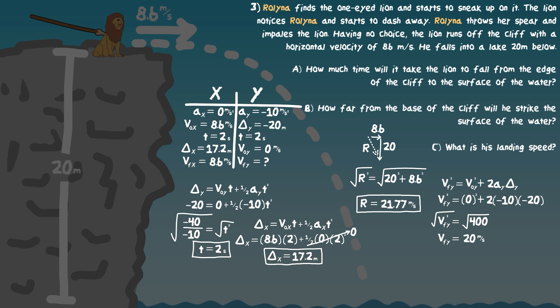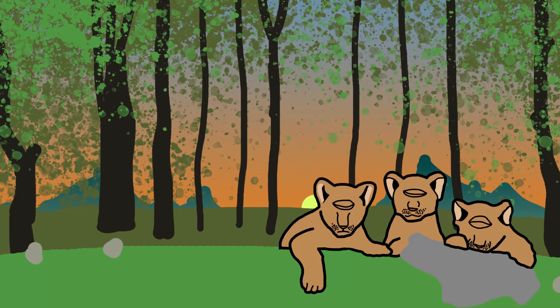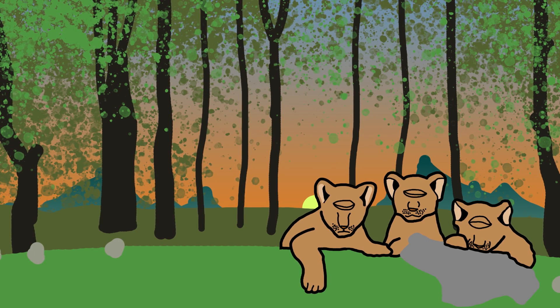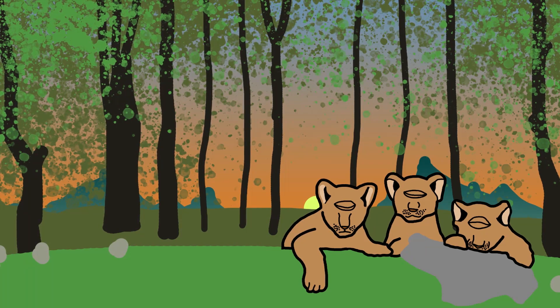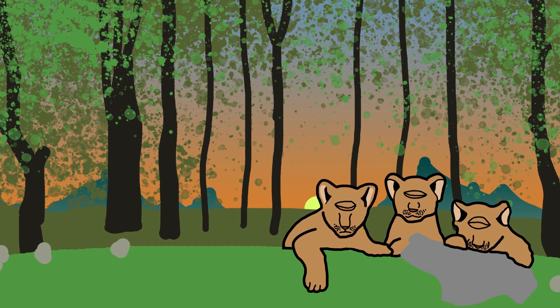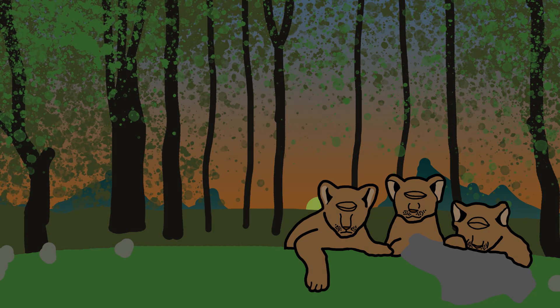When asking for landing speed, it means the combination of both X and Y velocity components. Rolina doesn't notice the lion resurfacing from the water, but on her way home she notices three baby lion cubs, each with only one eye not yet opened. Rolina thinks about throwing each of the cubs over the edge but realizes that wouldn't be very nice. She feeds them pumpkin soup instead. That's it for this lesson.